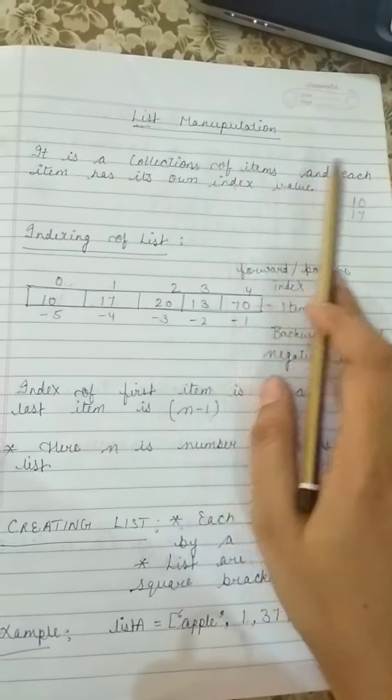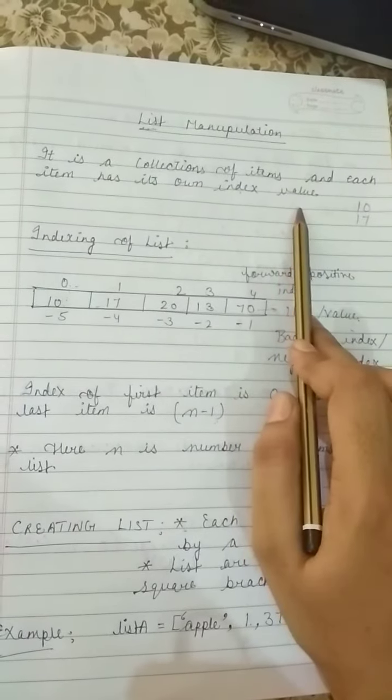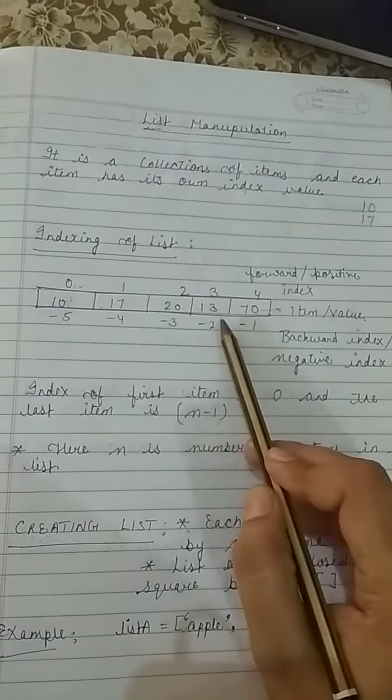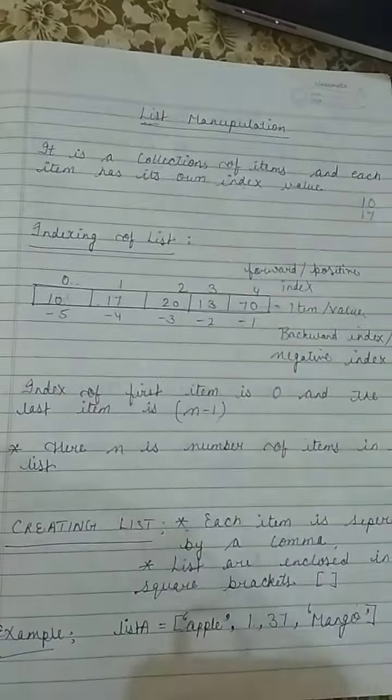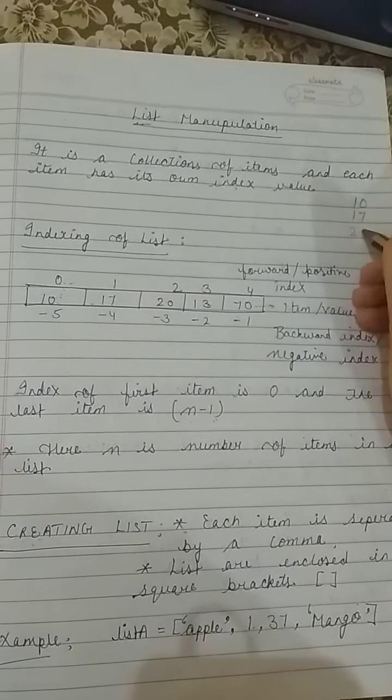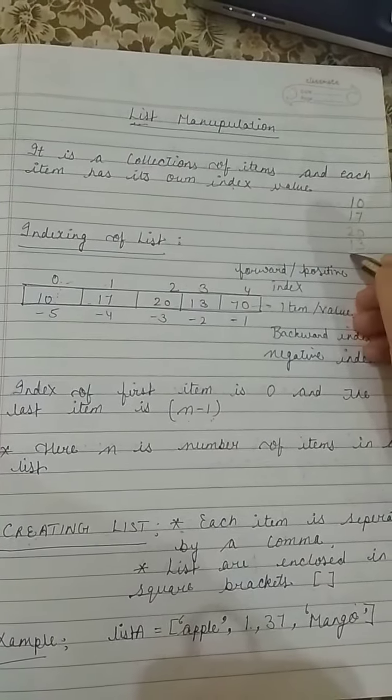Each item has an index value. Like here: 10, 17, 20, 30, and 70. So we are having 10, 17, 20, 30, and 70. This is our list.